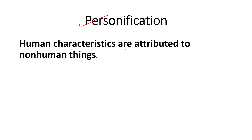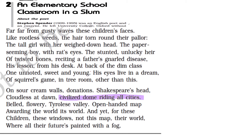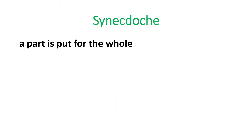Next is personification. Personification means human characteristics are attributed to non-human things. Some human characteristic is attributed to a non-human thing — it may be a thing or an animal. For example, 'civilized dome riding' — 'riding' is a human quality that is attributed to a non-human thing. That is called personification.